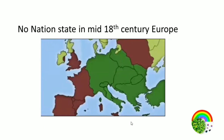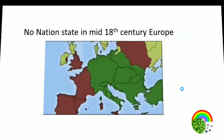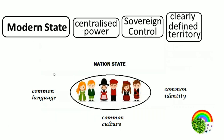Eighteenth century Europe was entirely different from today's Europe — nation states did not exist. People were thinking about two different ideas: the modern state, which meant centralized power and sovereign control over a clearly defined territory; and the nation state, which was a common collective notion involving common identity, common culture, and a common language they wanted to follow. This is called a nation state.